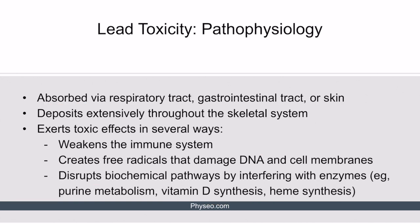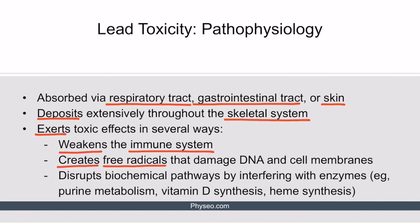Lead can be introduced into the body via the respiratory tract, the GI tract, or even the skin. Once inside, it spreads via the circulatory system and deposits extensively throughout the skeletal system, where it can be stored and gradually released back into the circulation over decades. Lead exerts its toxic effects in several ways: it weakens the immune system, creates free radicals that can damage DNA and cell membranes, and disrupts many biochemical pathways by interfering with enzymes. Examples of such pathways include purine metabolism, vitamin D synthesis, and heme synthesis.